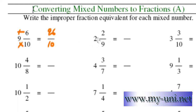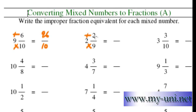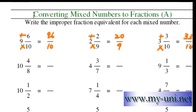To convert this mixed fraction into improper fraction, you multiply the denominator by the whole number. 9 times 2 is 18. 18 plus 2 is 20. So 20 over 9 would be the answer. 10 times 3 is 30. 30 plus 3 is 33. 33 over 10 would be the answer.